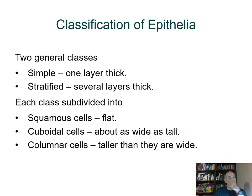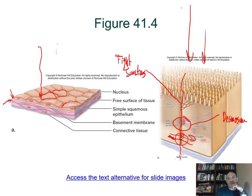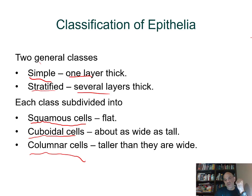We can classify epithelia based on the number of layers. Simple epithelia have one layer; stratified have several layers. We also name them by cell shape: flat cells are squamous, cube-shaped are cuboidal, and tall cells are columnar. For example, one layer of flat cells is simple squamous; one layer of tall cells is simple columnar epithelium.